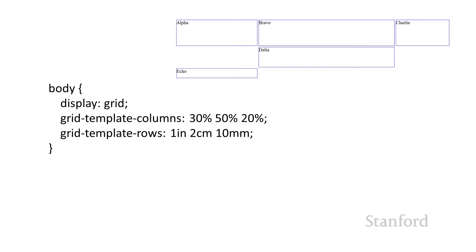There are different options for laying out the grid with different measurement types. One interesting measurement type is percentages — you can lay out the grid 30% in the first column, 50% in the second, and 20% in the third. For rows, you can use set measurements with inches, centimeters, and millimeters. The main point is you've got a bunch of different measurement types, and you can mix them as well.